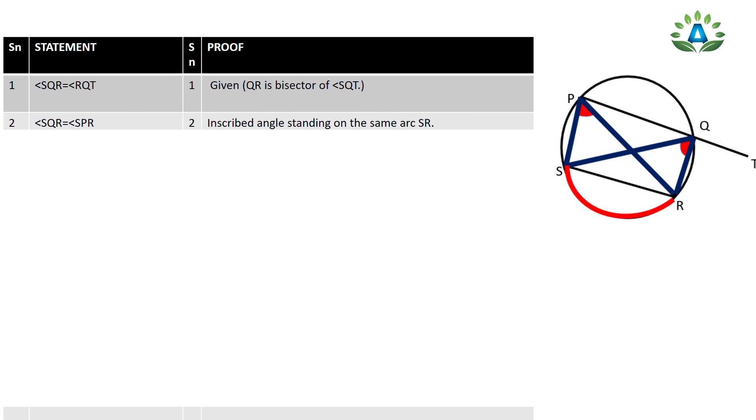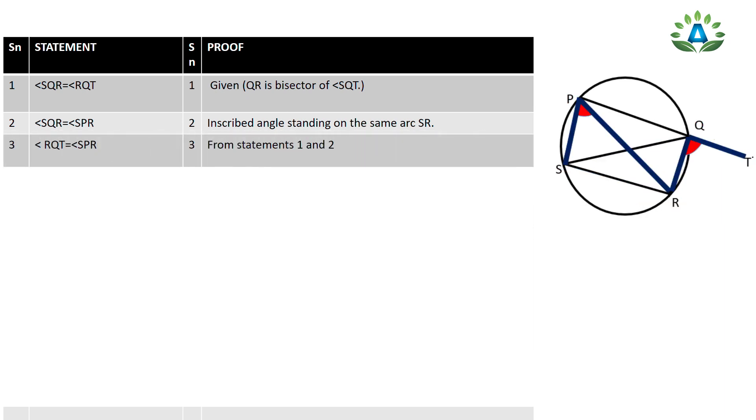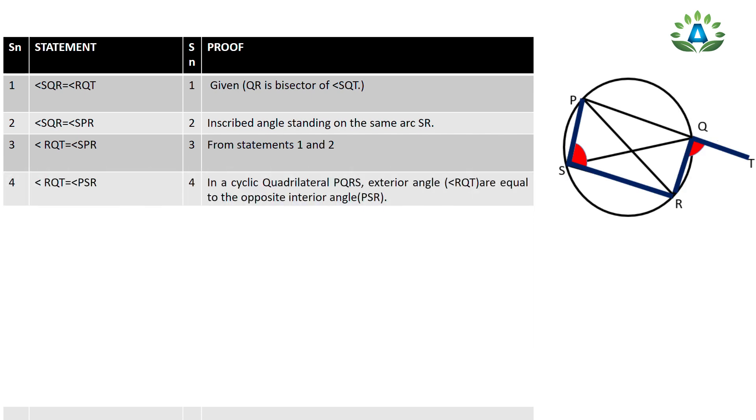Statement 3: Angle SQR equals angle SPR, because these are inscribed angles standing on the same arc. Statement 4: In cyclic quadrilateral PQRS, the exterior angle RQT equals the opposite interior angle PSR. From statements 1 and 2, angle RQT equals angle SQR. From statements 3 and 4, angle SPR equals angle PSR.